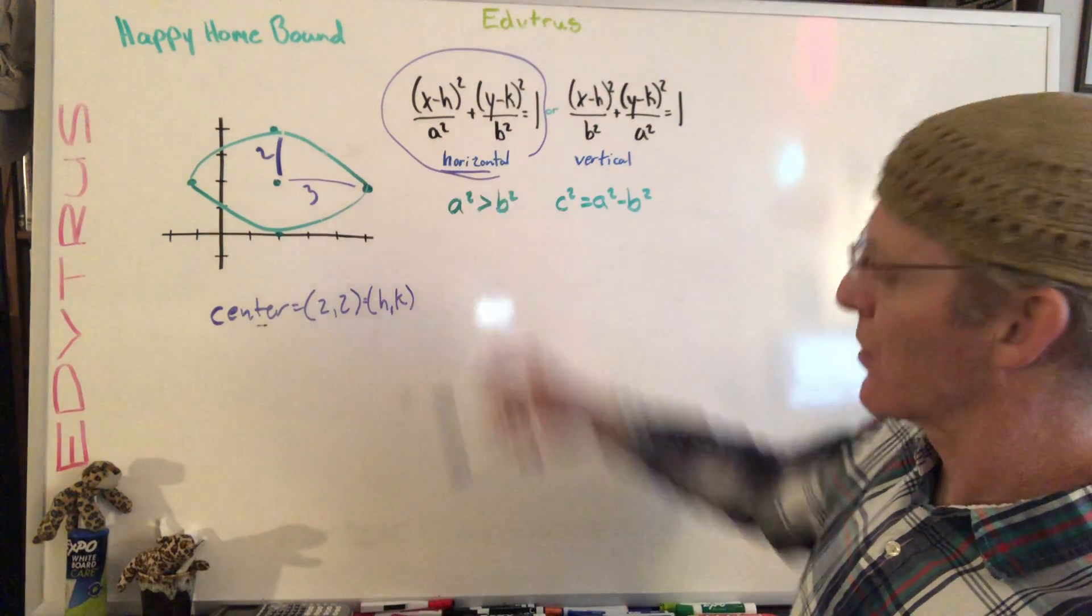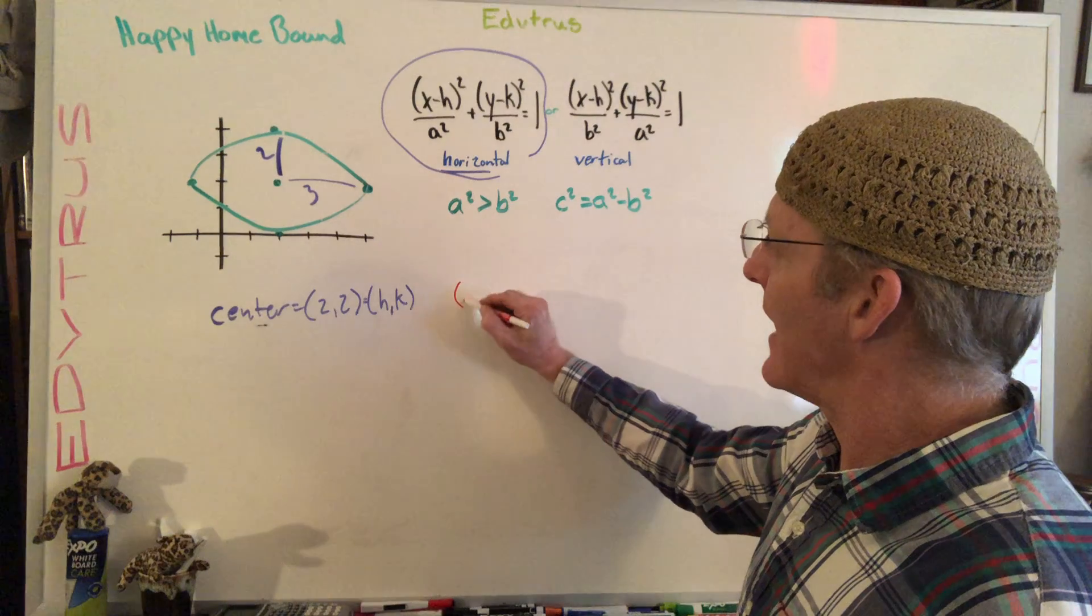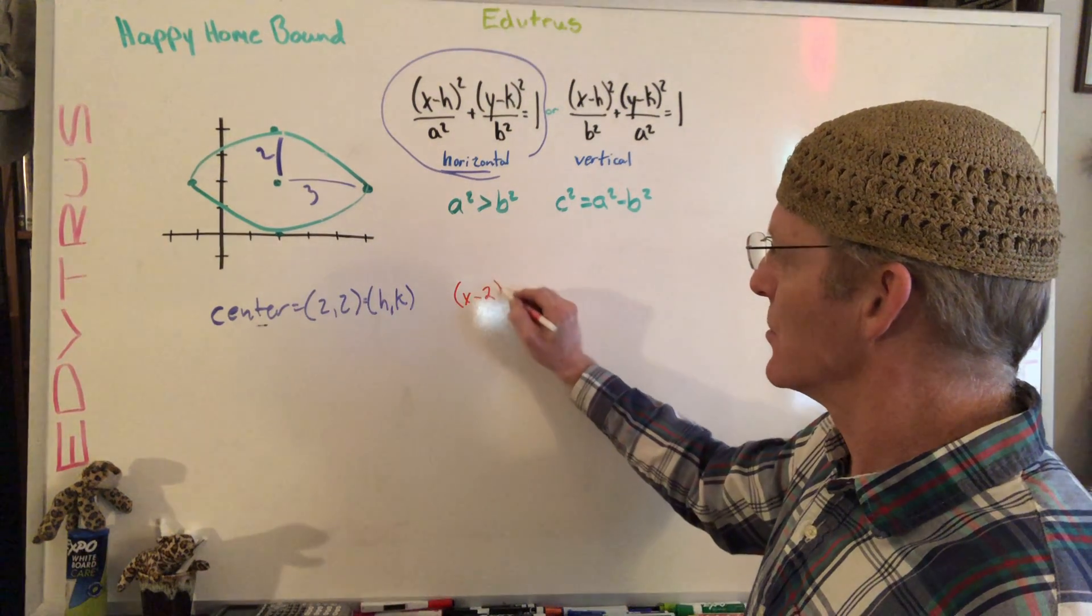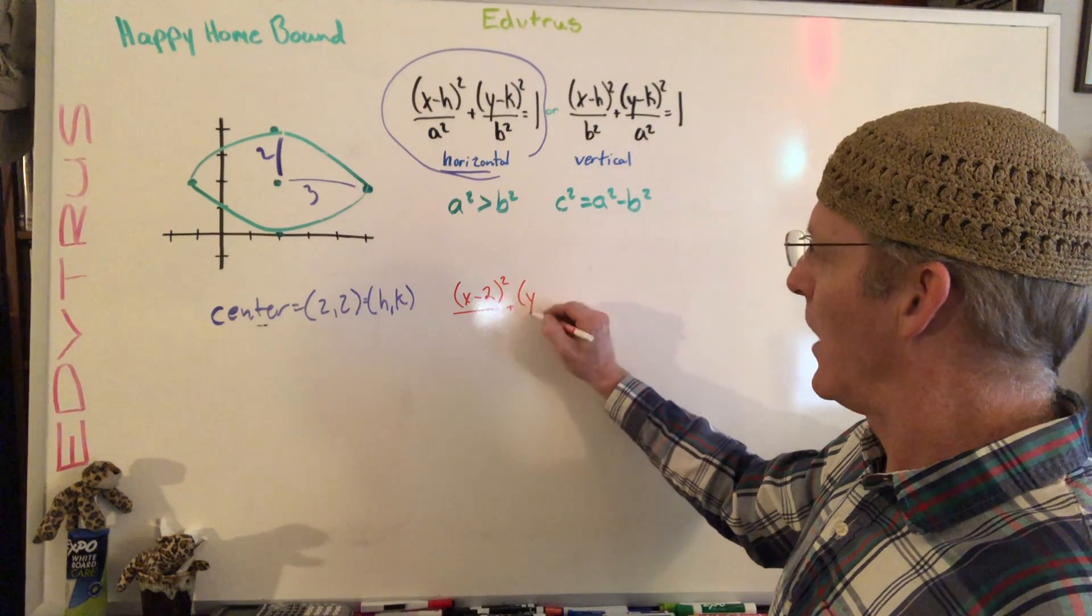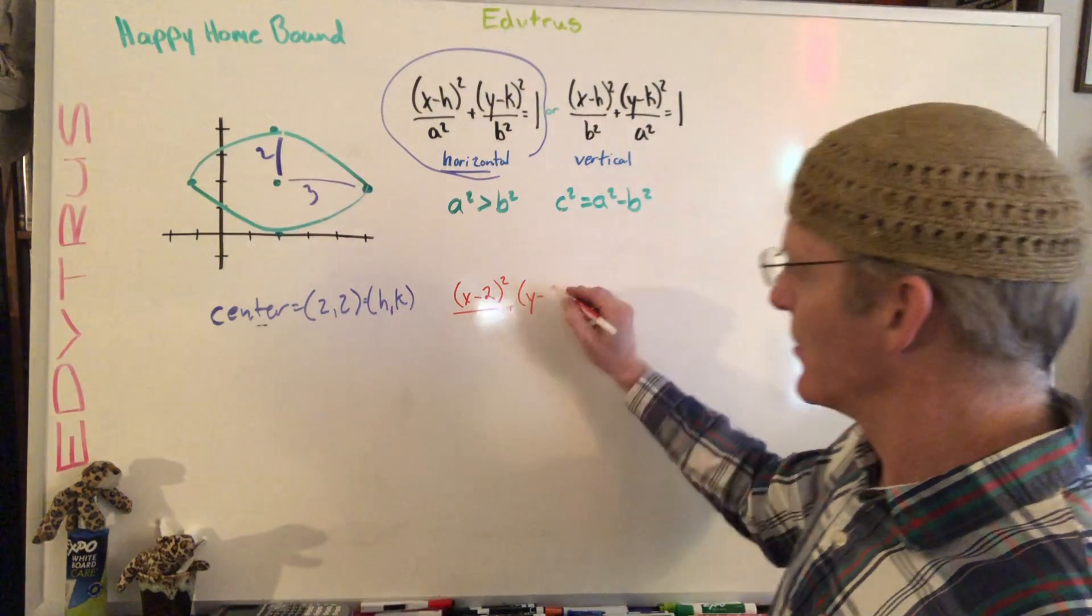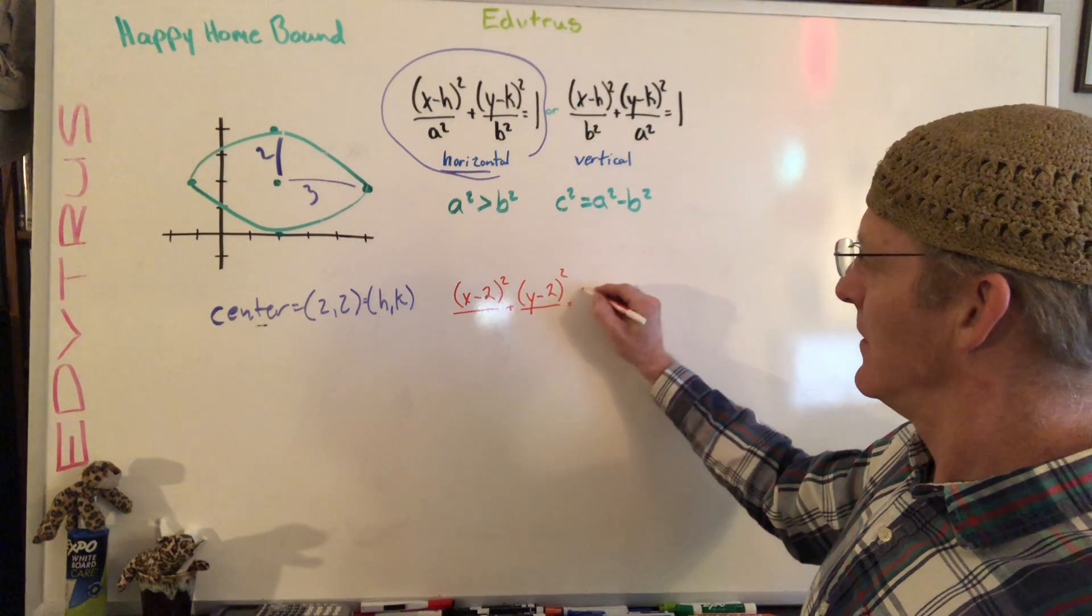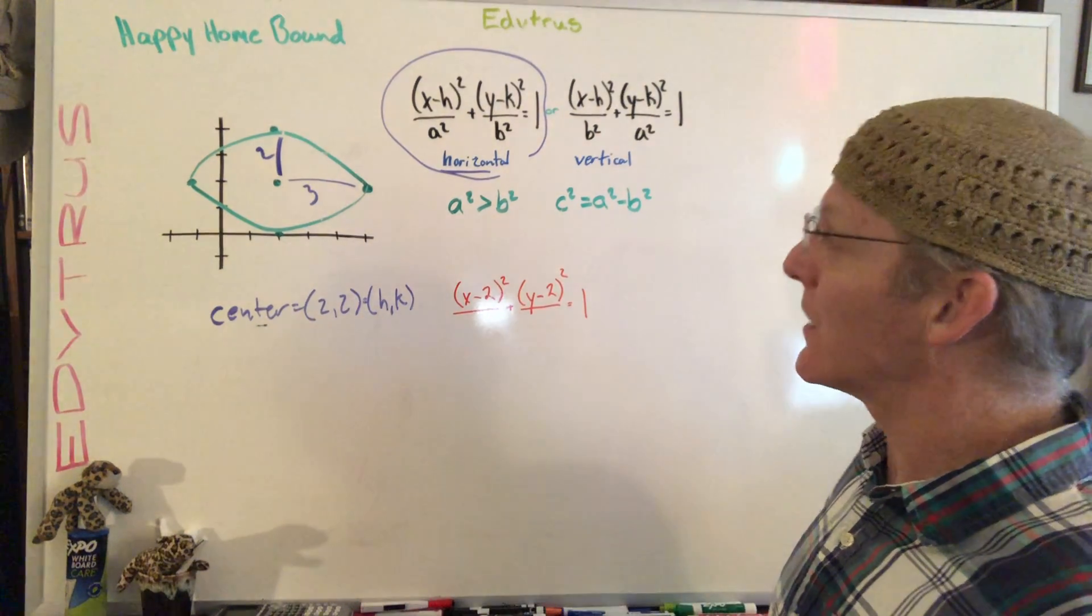Okay, so we've got H and K, we know it's horizontal, so so far we can write part of our answer. We can go ahead and write (X minus 2) squared over something, plus (Y minus 2) squared over something, and we know it always equals 1.